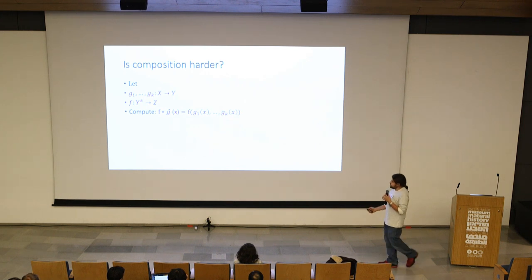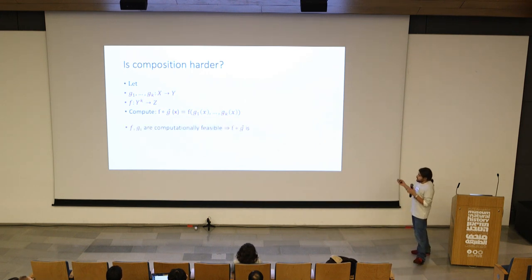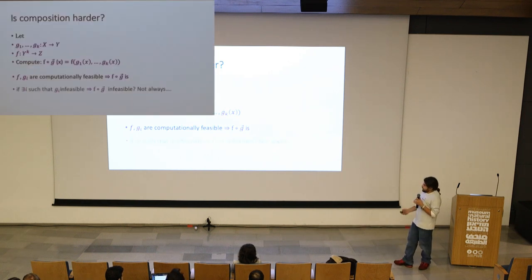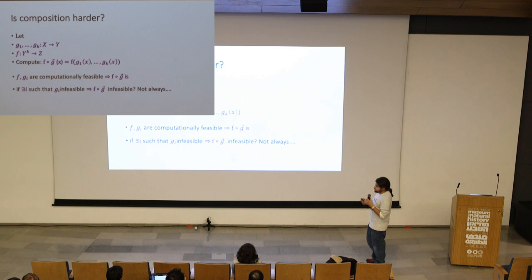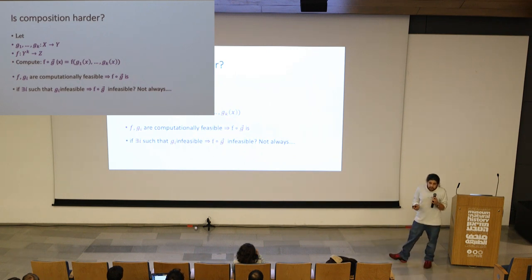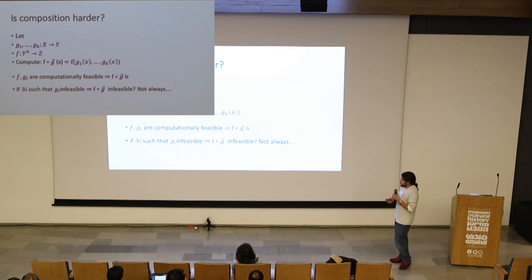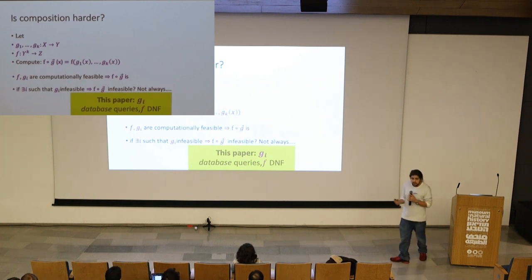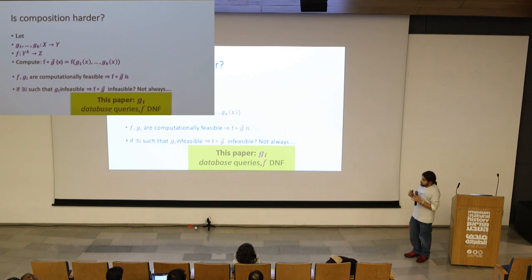How would you compute the composition? Well, clearly, if you can compute each one of g1 to gk and also f, then you can also compute the composition. But say one of the gi's is hard — sometimes the composition may also be hard, but sometimes it remains easy. This is kind of the question that will be discussed in the first talk, though of course we'll be more specific than this abstract setting.